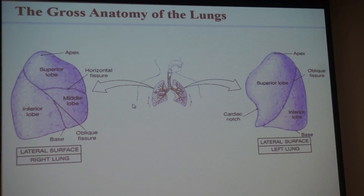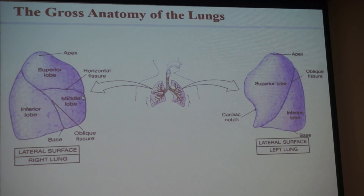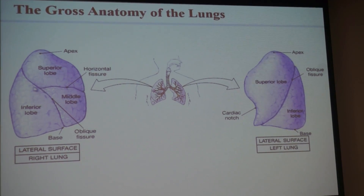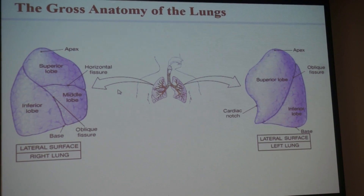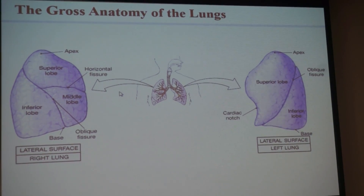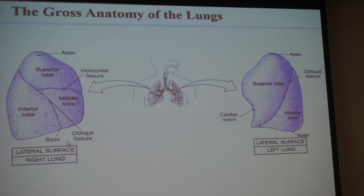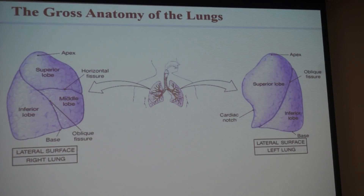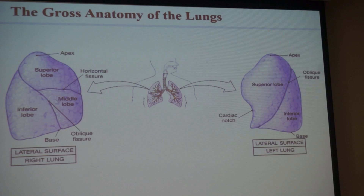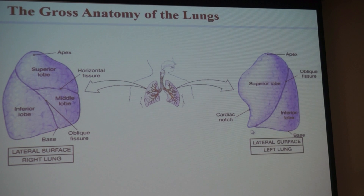Why did they name them the way they did? The horizontal fissure is more horizontal, and a fissure is like a deep groove. The oblique fissure is running at an angle — it's oblique. So the right lung has three lobes.